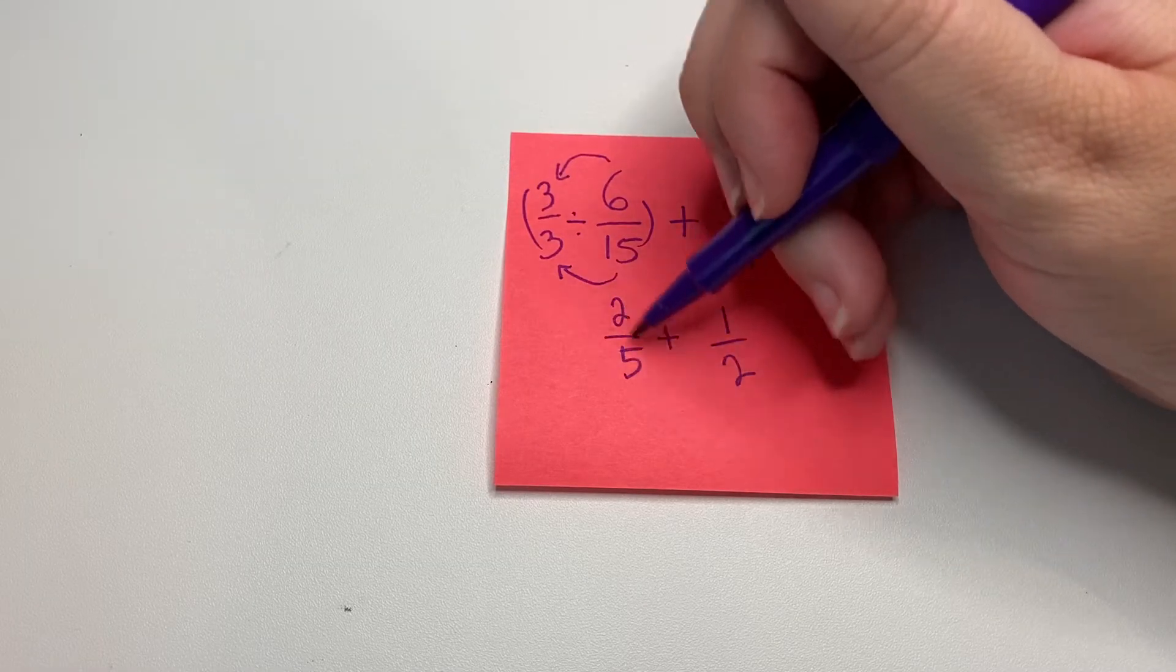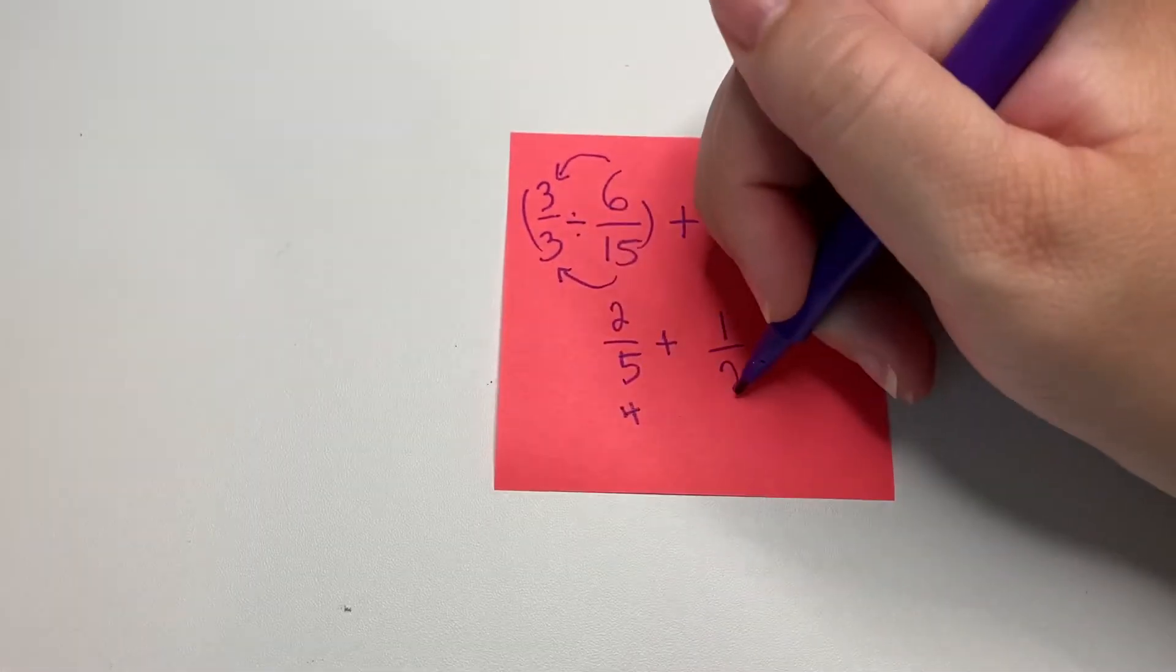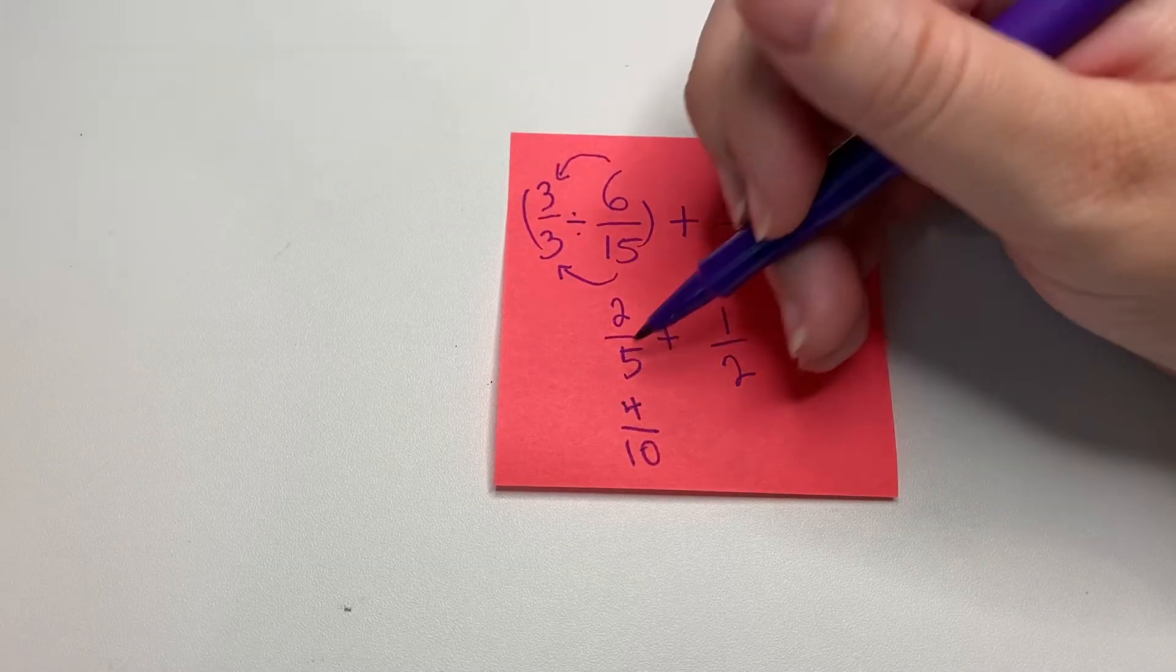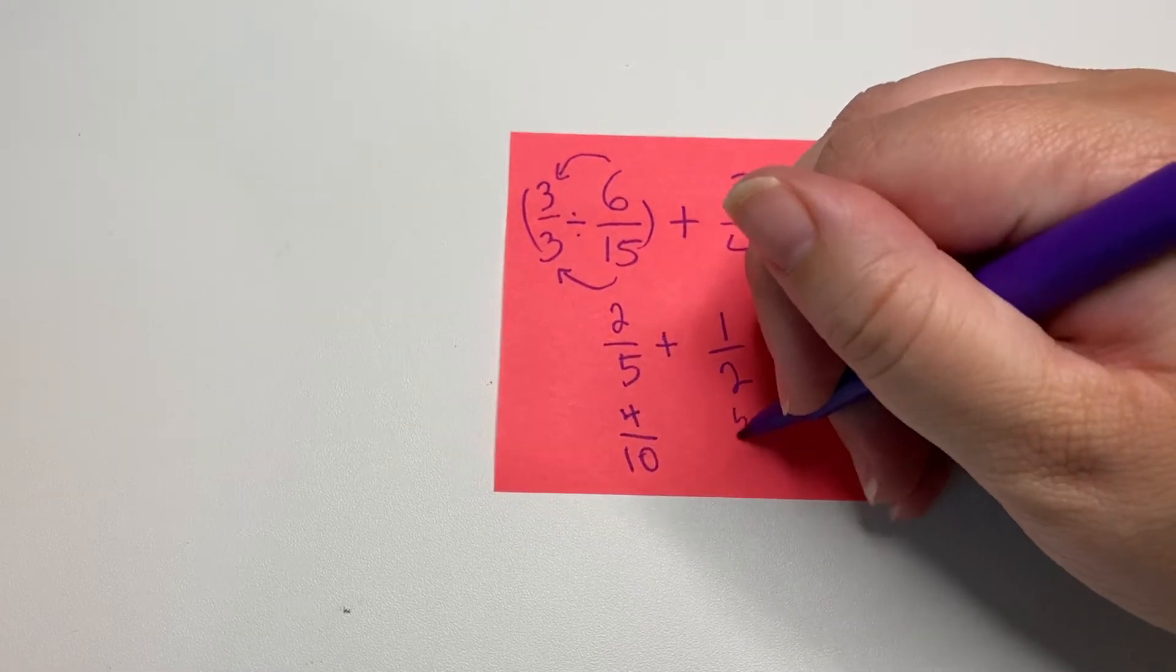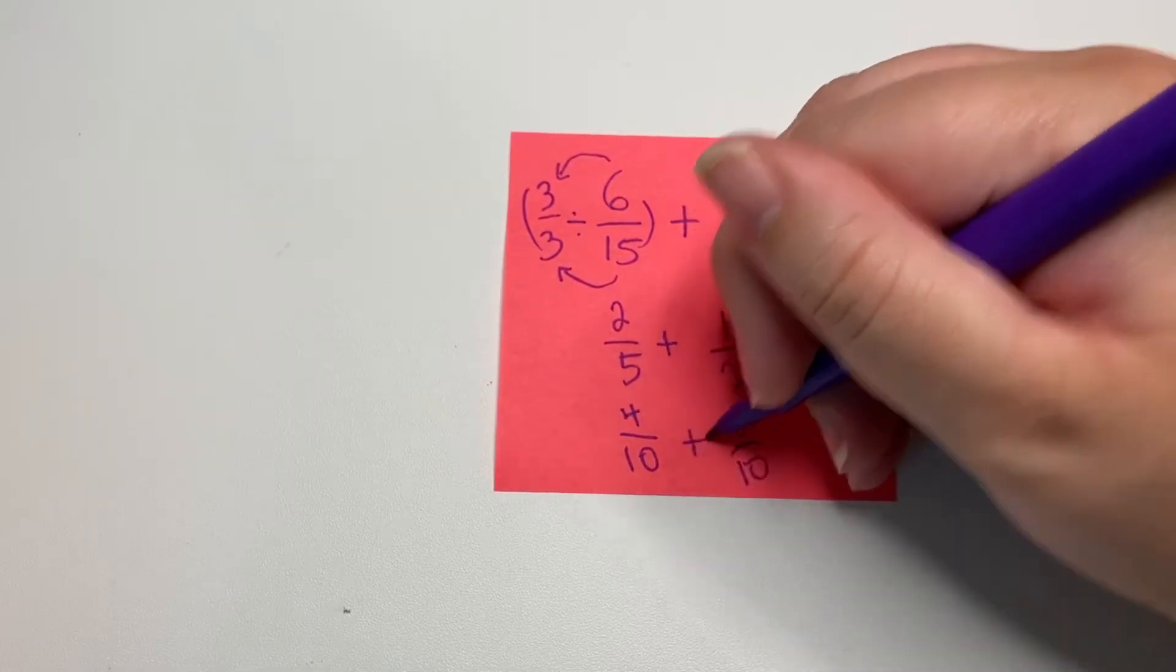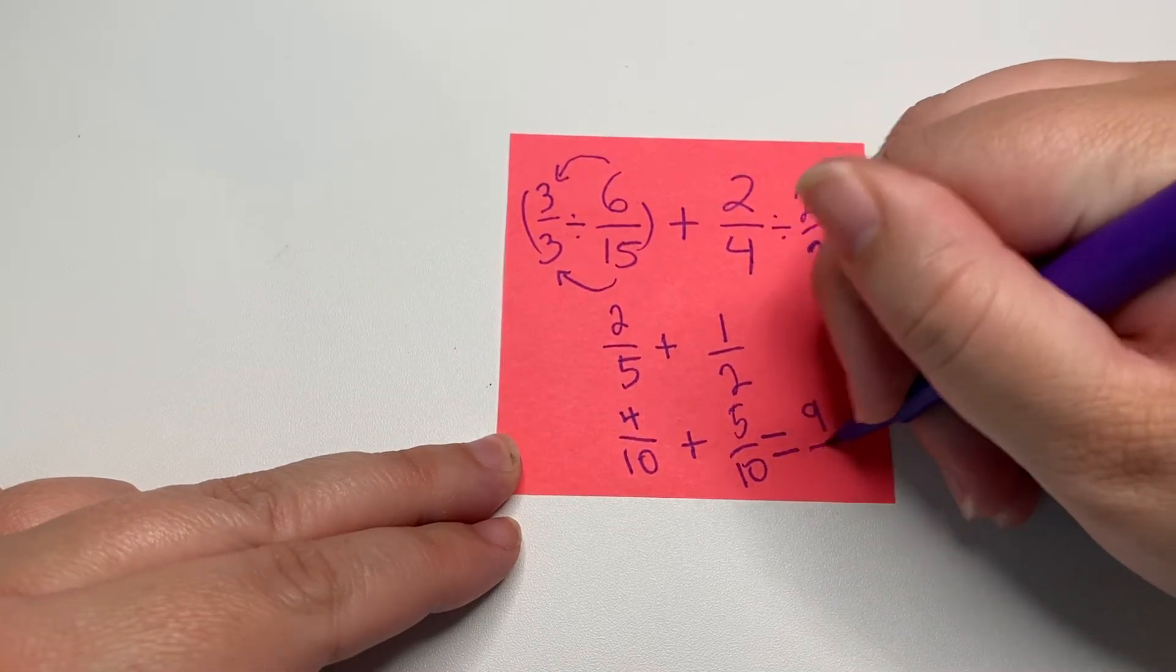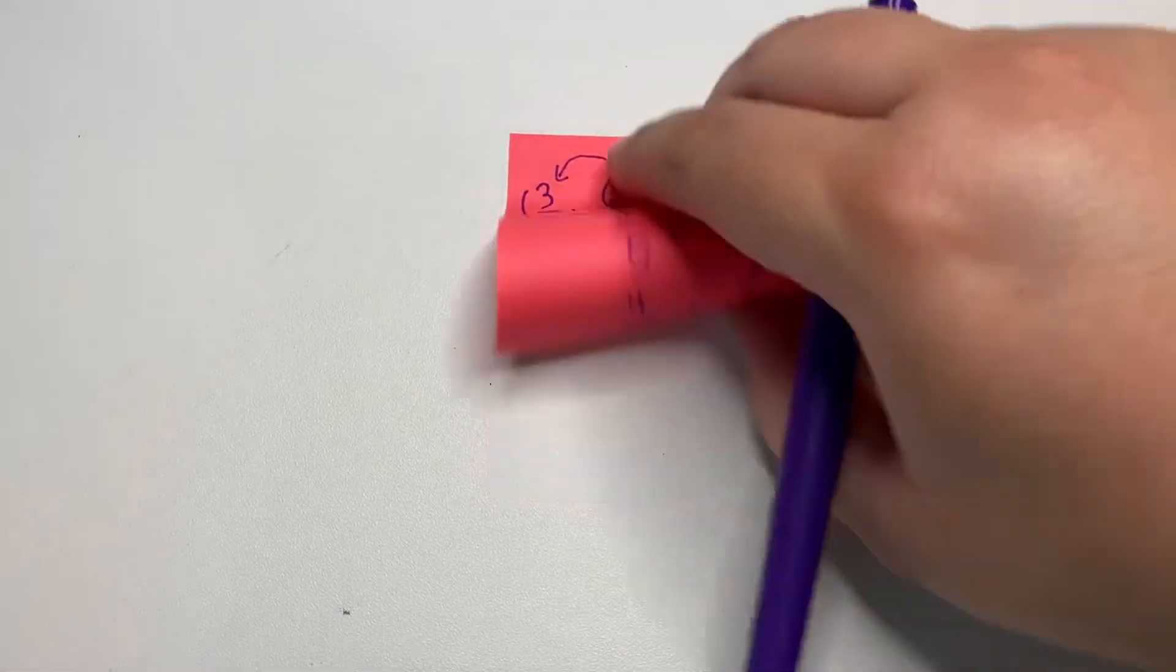These two by two, so 2 times 2 is 4, 2 times 5 is 10. And then this, the numerator and the denominator will be multiplied by this denominator. So 5 times 1 is 5 and 5 times 2 is 10. So we have 4/10 plus 5/10, which when we add them together equals 9/10. Okay, let's look at another example of this.